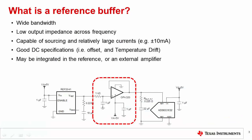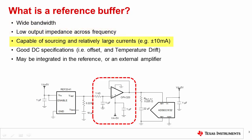The term reference buffer is used to describe a wide bandwidth amplifier used between the reference and the ADC input. The reference buffer responds to very fast transient current requirements on the switch capacitor ADC reference input. Note that multiple transients from the reference input can be milliamps in amplitude and are spaced in nanoseconds. Besides having wide bandwidth, a good reference buffer needs to have low output impedance across frequency and be capable of sourcing and sinking relatively large currents, for example, plus or minus 10 milliamps.